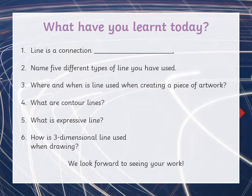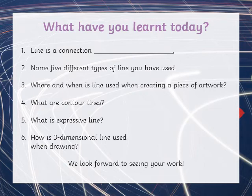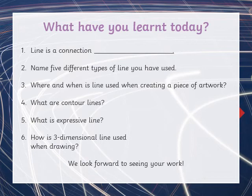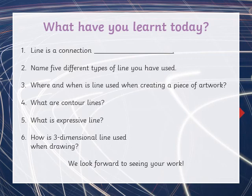Once you've finished doing that activity, we can have a look at some of these questions. Perhaps this is something you could discuss with a grown-up at home, or jot down your notes on a piece of paper and send them to us. The questions are: line is a connection — what is it a connection between? Can you name five different types of line that you used in your activity? Where and when is line used when creating a piece of artwork? Can you remember what contour lines were? What's an expressive line? How is three-dimensional line used when drawing? We look forward to seeing your work, and I hope you enjoy using your pencil in lots of different ways this afternoon.